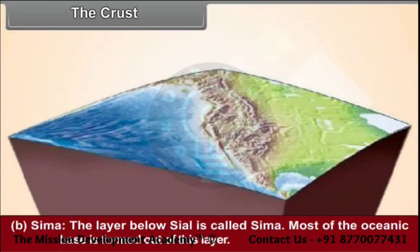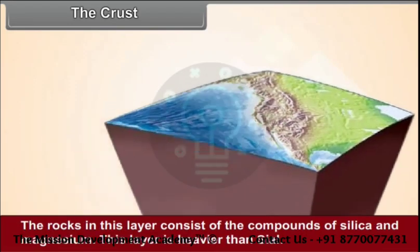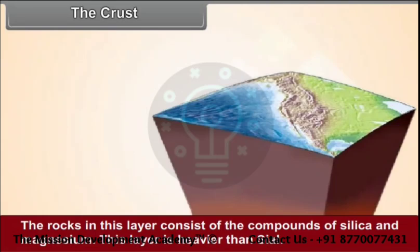The layer below Sial is called Sima. Most of the oceanic base is formed out of this layer. The rocks in this layer consist of the compounds of silica and magnesium. This layer is heavier than Sial.